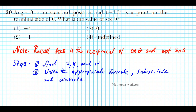Let's take a look at problem number 20. It reads, angle theta is in standard position and (negative 4, 0) is a point on the terminal side of theta. What is the value of secant theta? One important thing to note: secant is the reciprocal of cosine, not sine. Many students associate secant starting with S with sine — that's not the case. Keep that in mind.